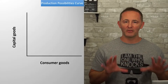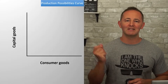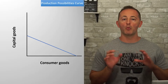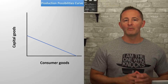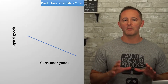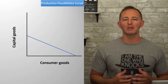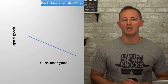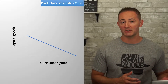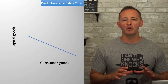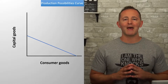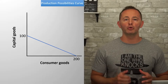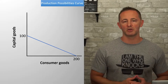We'll put capital goods on our vertical or y-axis, and consumer goods on the horizontal or x-axis. For this version of the PPC, we have a downward sloping line going from one axis to the other. This curve represents the outer limit of what is currently possible for the economy or the person to produce. Notice that they can produce at a maximum 100 capital goods or 200 consumer goods.